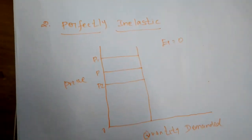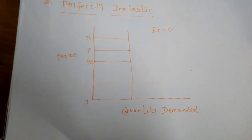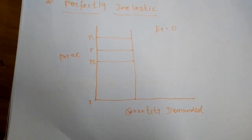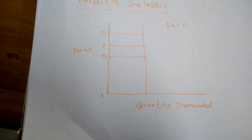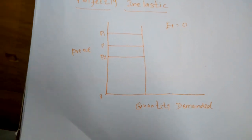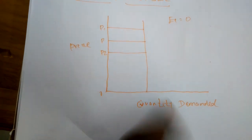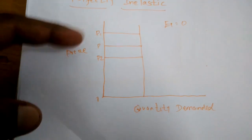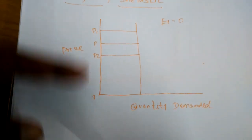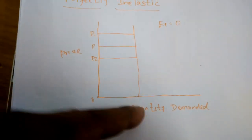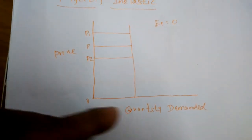Next is perfectly inelastic demand. Here, even if prices increase or decrease by a little or a lot, the quantity demanded will not change. When there is no change in demand for a product due to a change in price, the demand is said to be perfectly inelastic. For example, when price is OP and increases to OP1 or OP2, the quantity demanded remains the same.